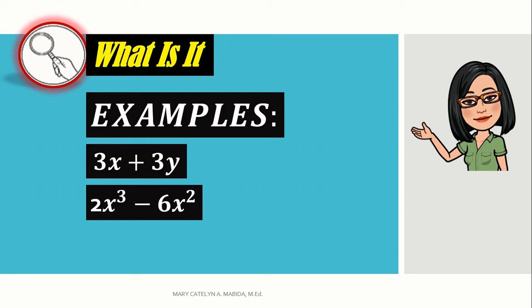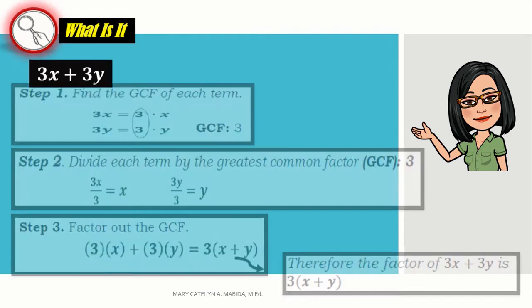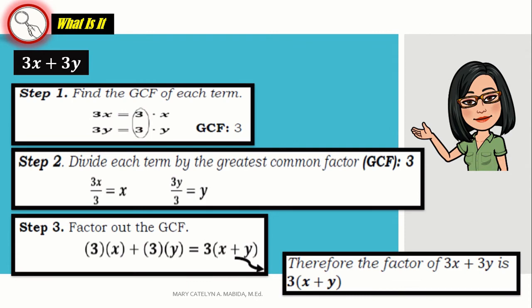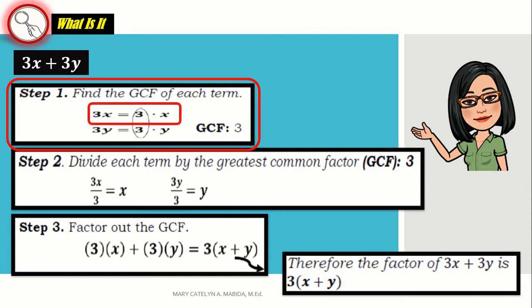Factor 3x plus 3y. Now, note, all the numbers to be used in finding the GCF must be prime numbers. So, the factors of 3x are 3 and x.